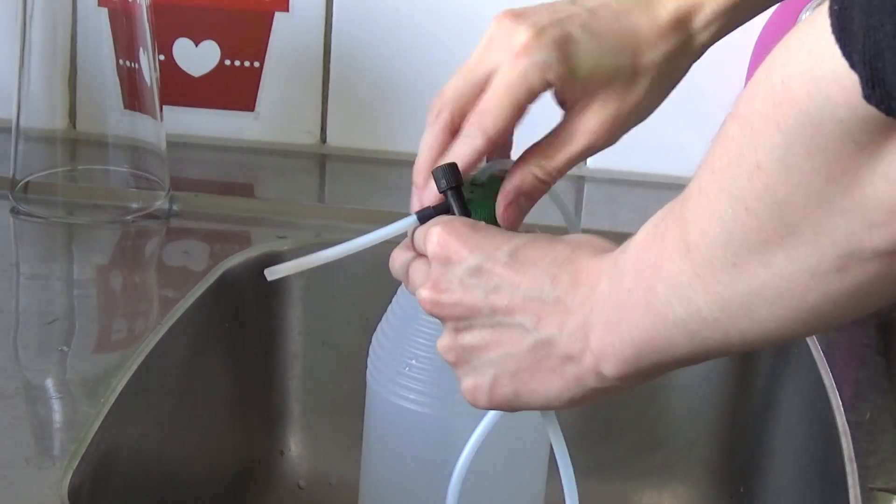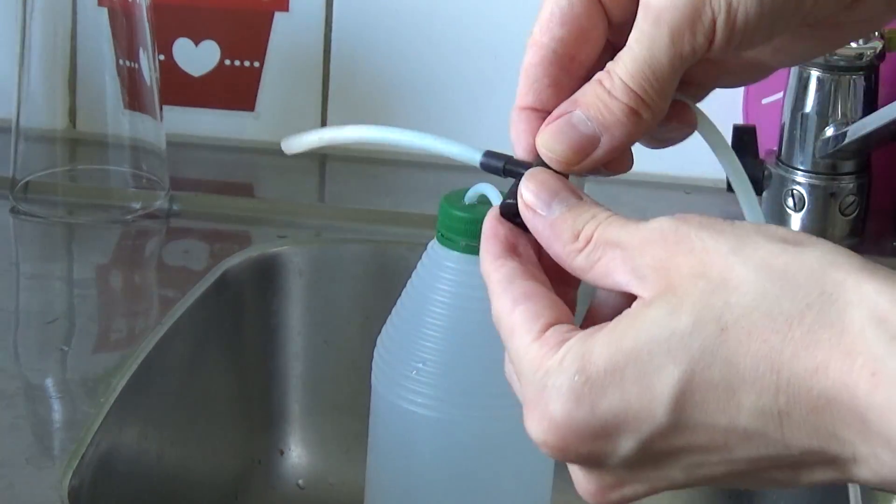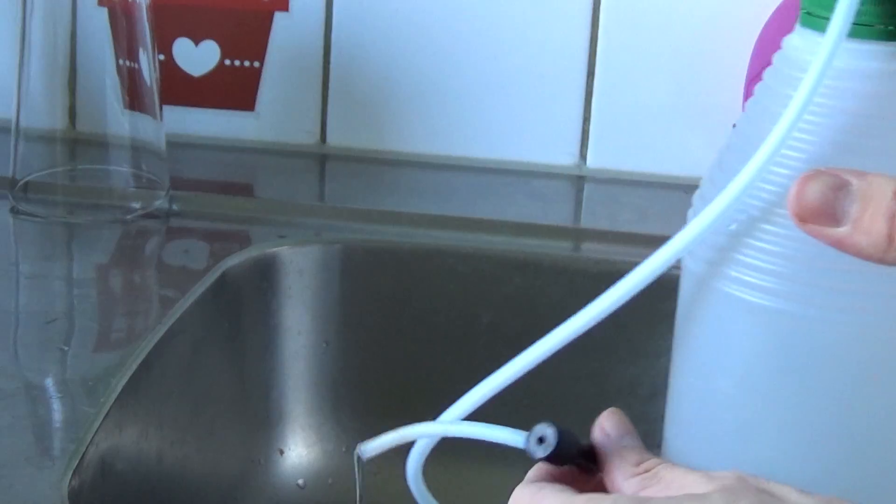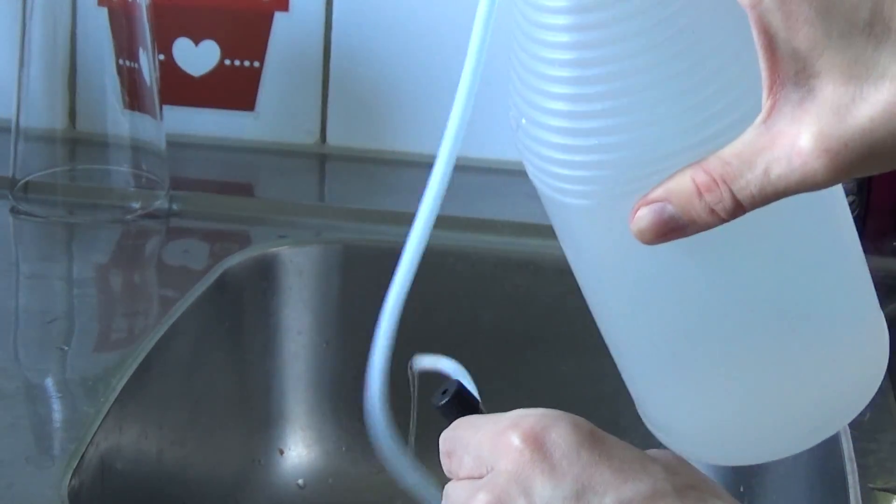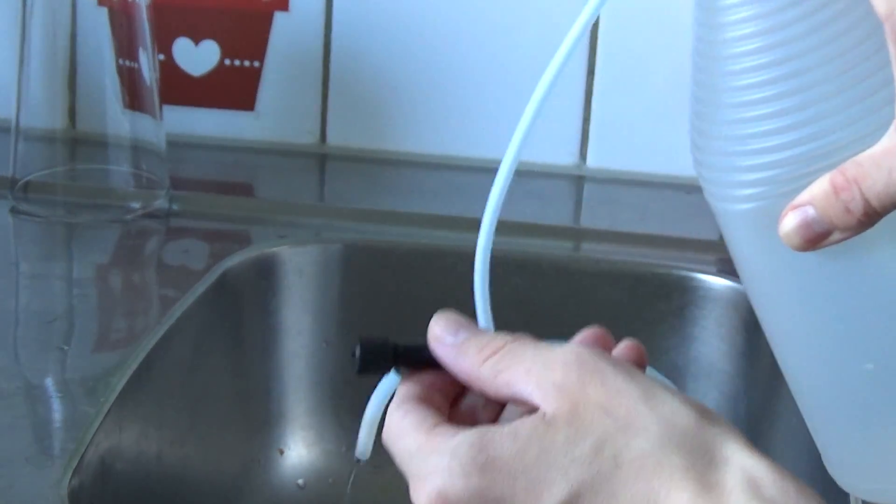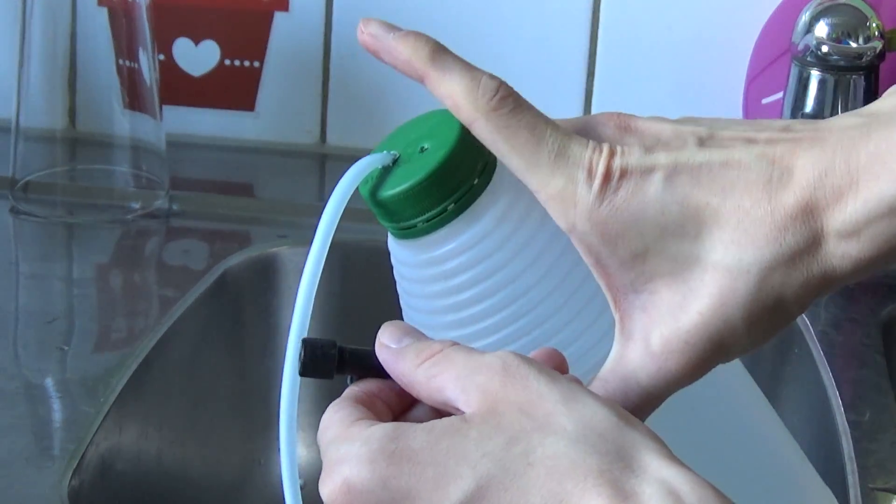And make sure the valve is open. Cover the other hole with your finger and squeeze the bottle until water comes through the tube. Now you can let go and it will keep running through on its own.